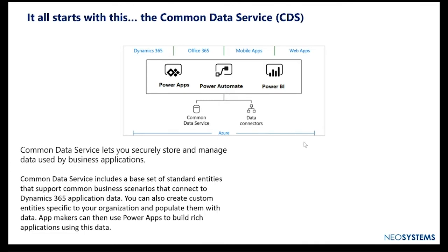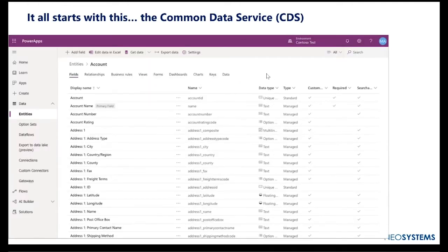Out of the box you get a bunch of standard entities. For anyone familiar with our product, that would be things like accounts and contacts. If you're using sales or customer service you're quite familiar with accounts, contacts, and entities like that. In the Common Data Service back end, you can see the account entity with all its fields and data types — your account entity is standard across all your applications, using one shared data space.